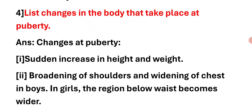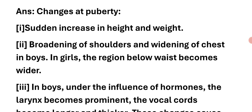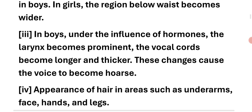Next question: List changes in the body that take place at puberty. Changes at puberty: First, sudden increase in height and weight. Second, broadening of shoulders and widening of chest in boys; in girls, the region below the waist becomes wider. Third, in boys under the influence of hormones, the larynx becomes prominent, the vocal cords become longer and thicker — these changes cause the voice to become hoarse.